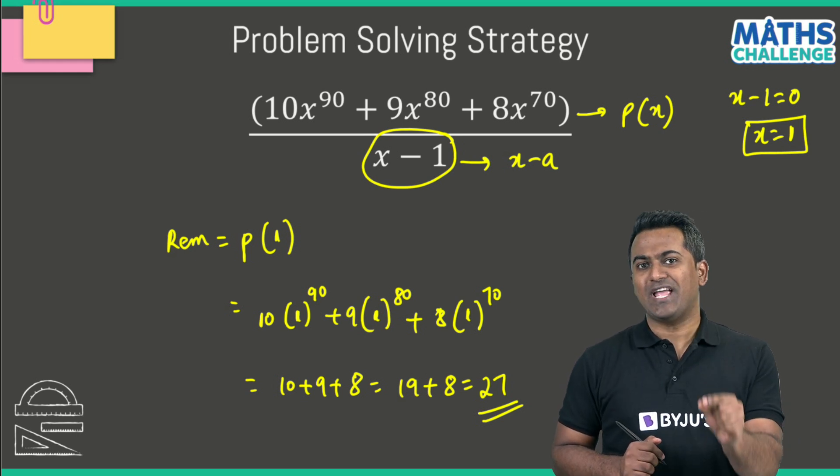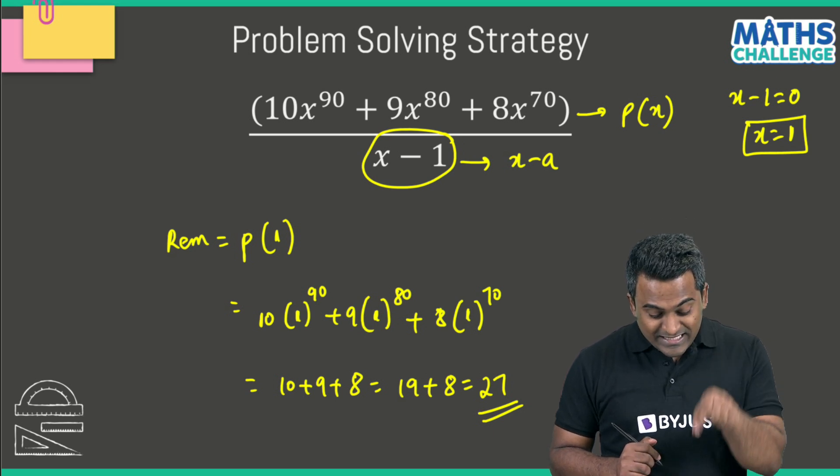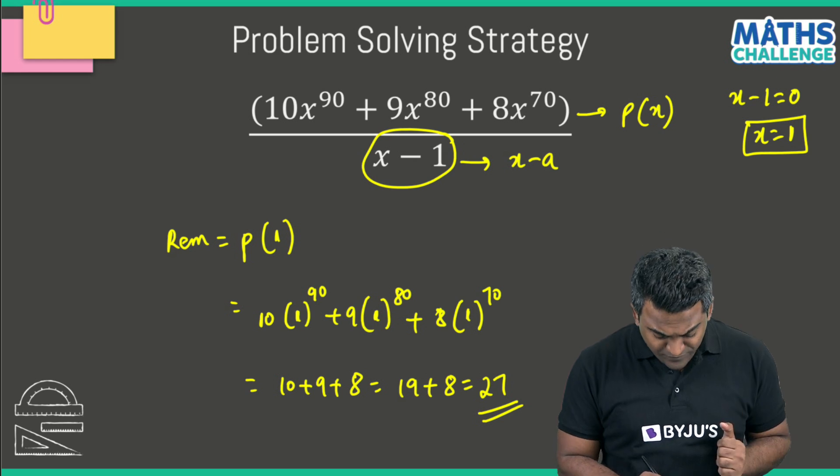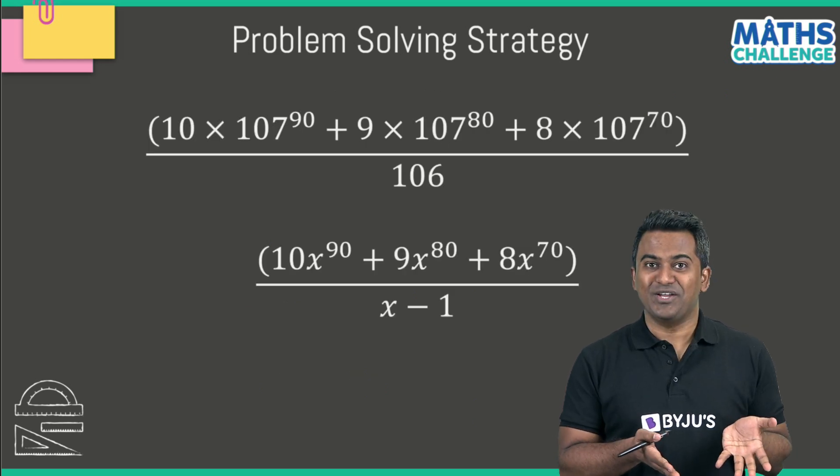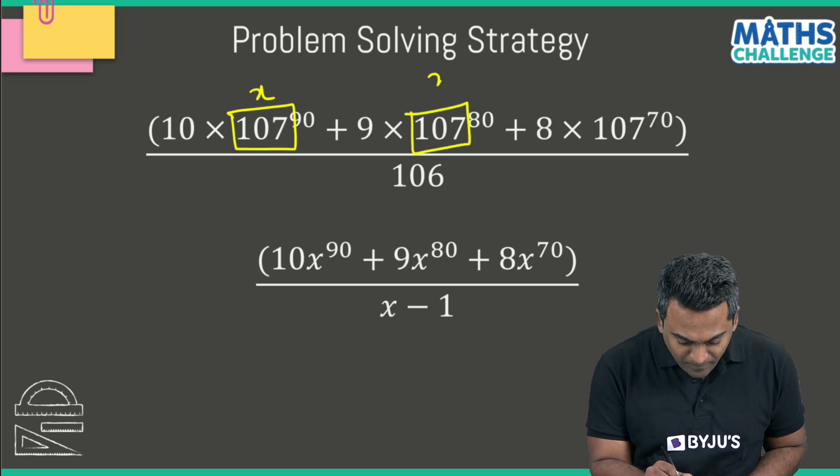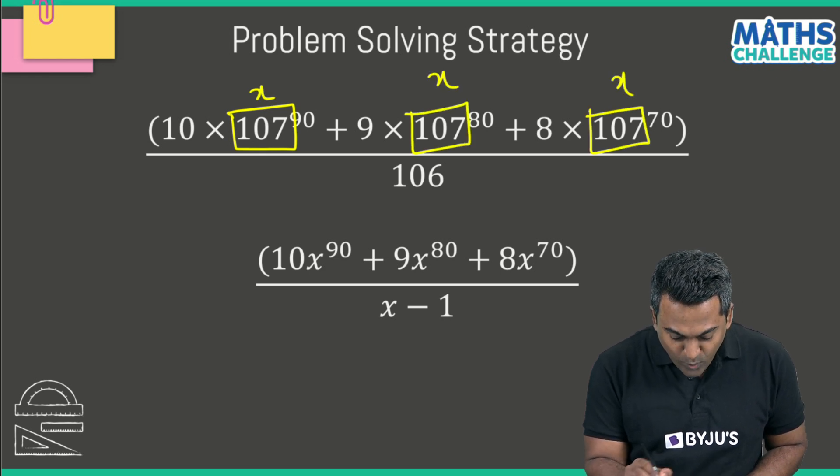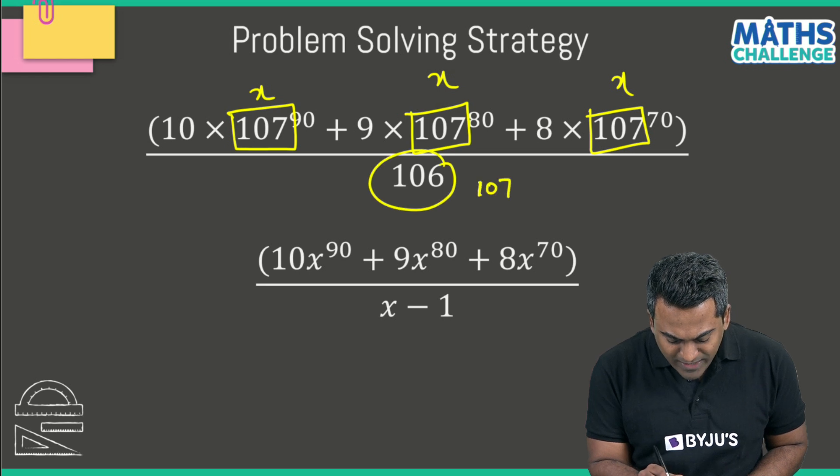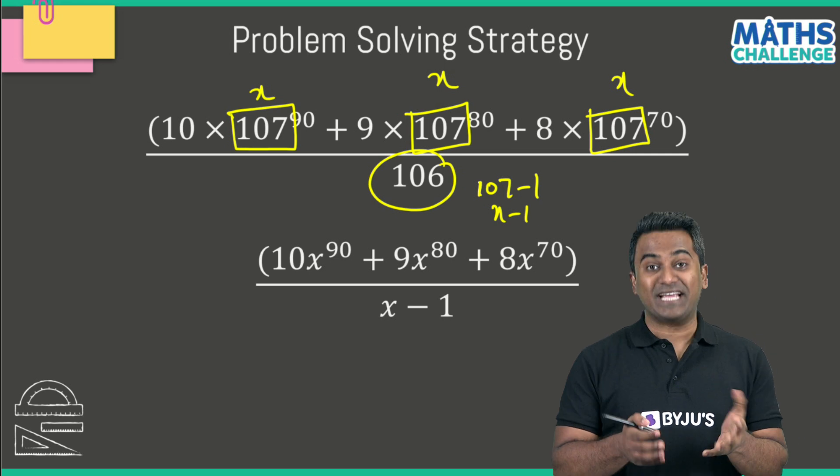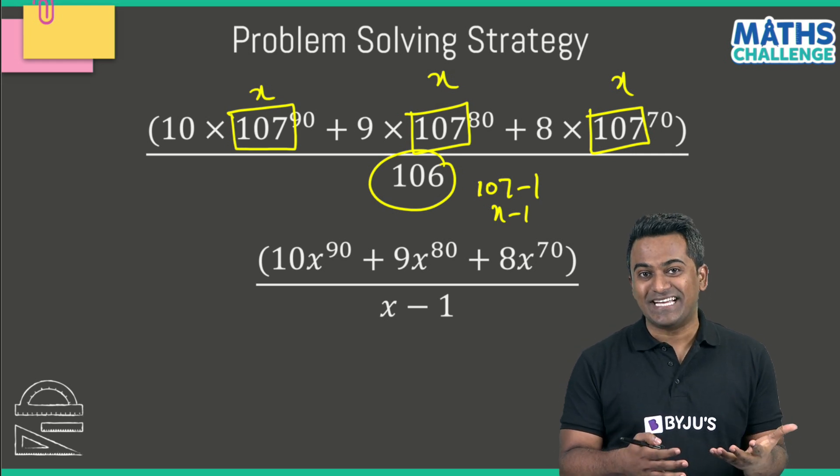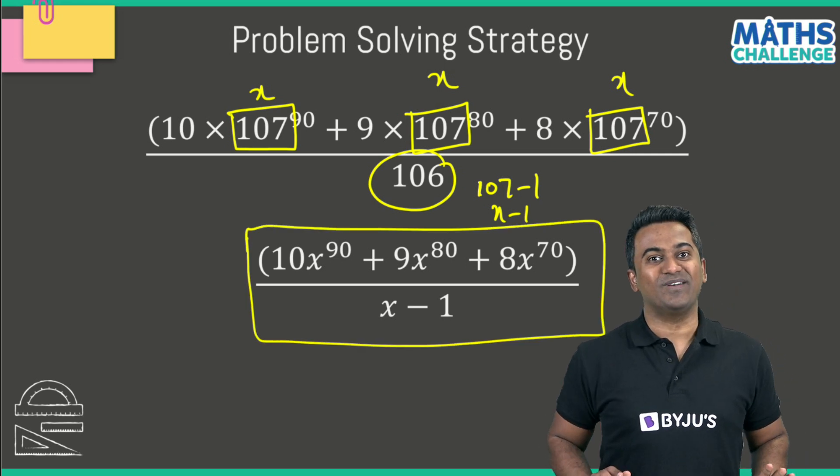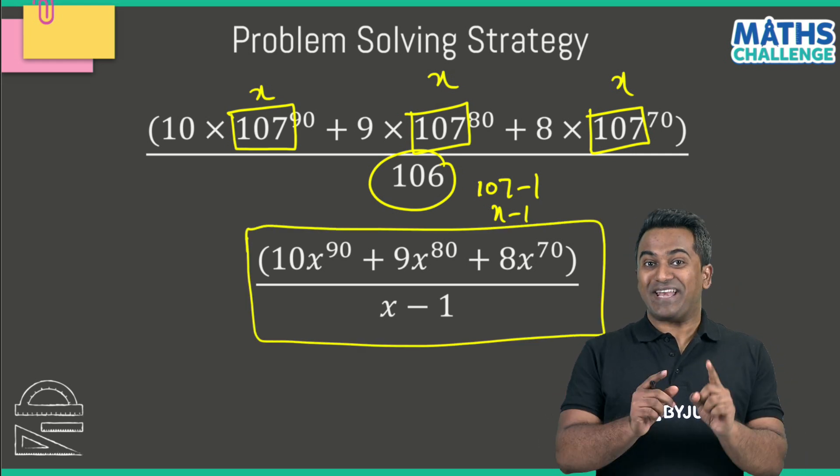As I said, the question we were given and this question here are similar. What's the difference? The difference is simply this: if I consider 107 to be x, then 106 can be written as 107 minus 1. So this can be written as x minus 1, and the answer is going to be similar to the one we calculated here.